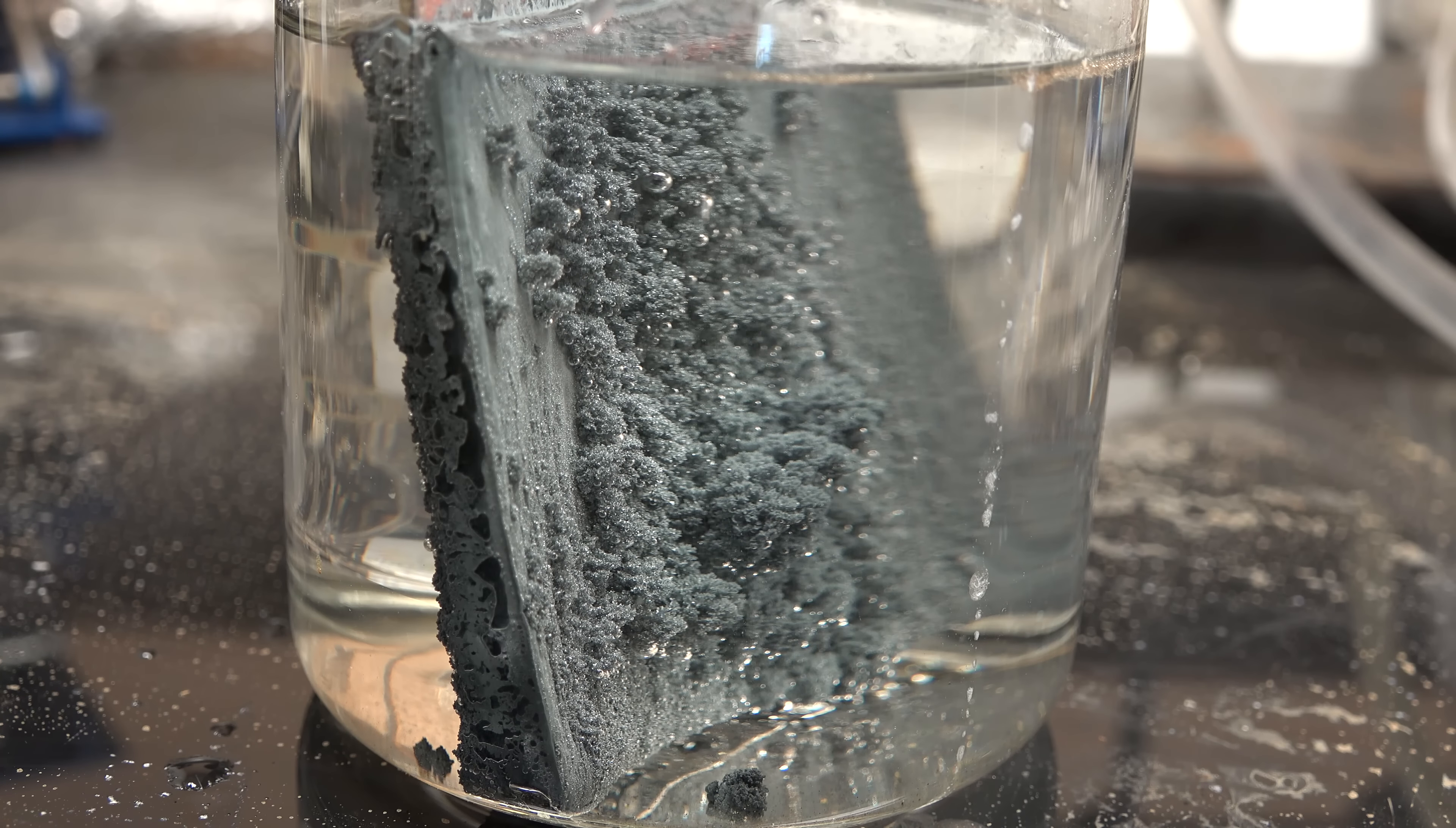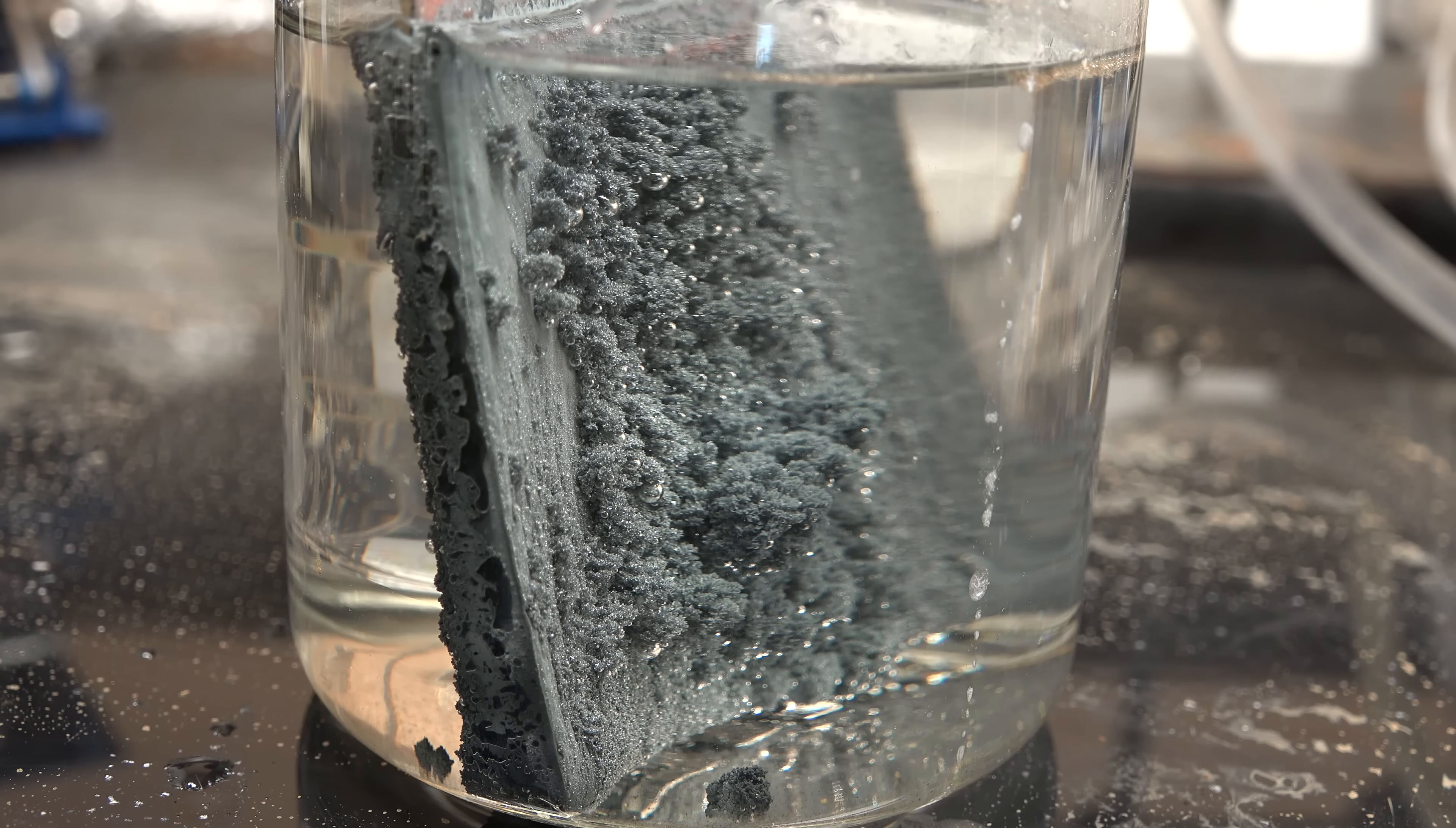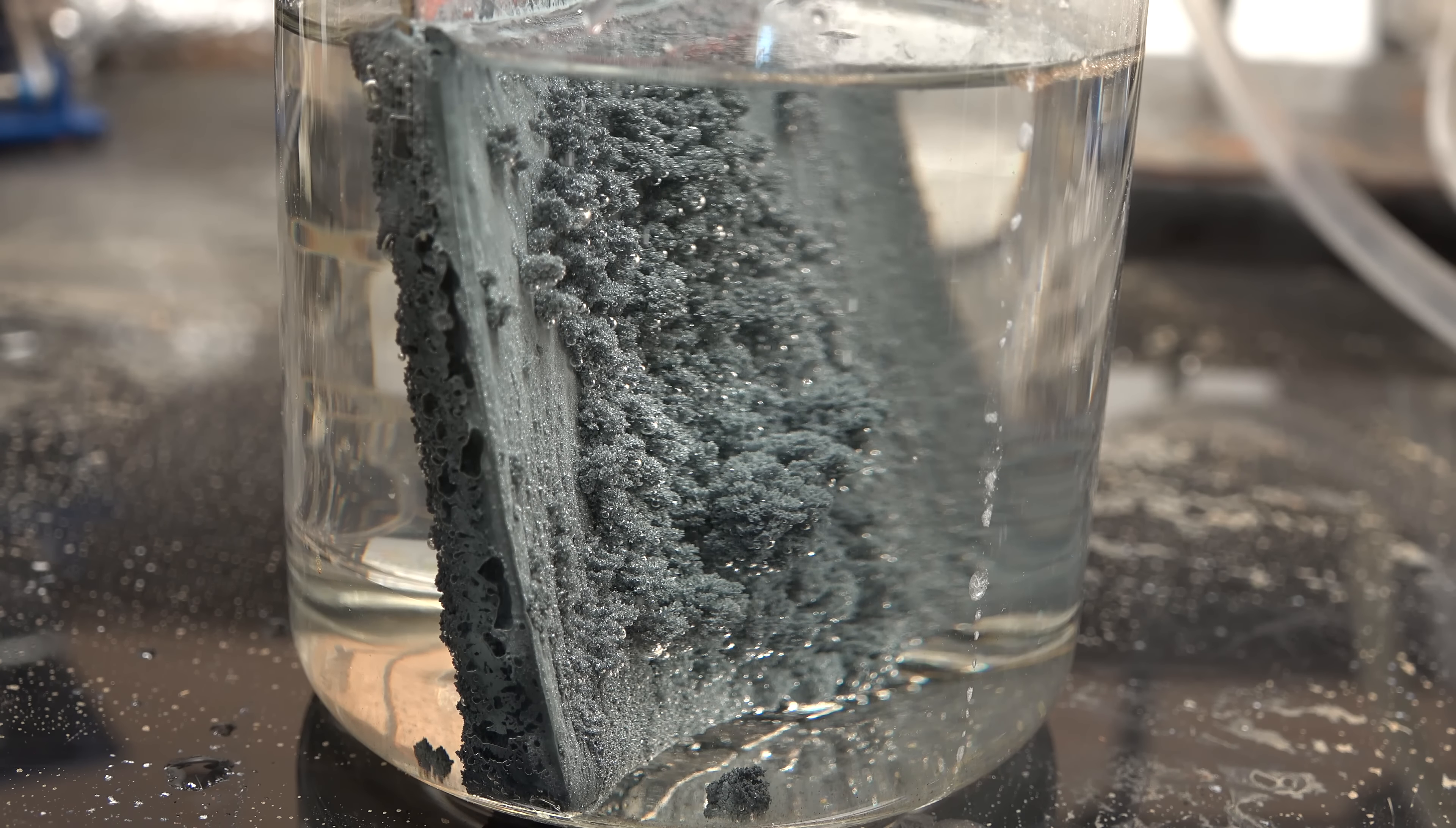This is because we've depleted the solution of zincate and now we're left with a concentrated solution of sodium hydroxide. Zinc actually reacts with concentrated sodium hydroxide to form sodium zincate again and hydrogen gas. Stopping the reaction is easy enough, remove it from the solution and give the zinc a good wash with water.